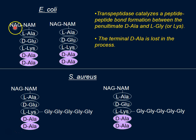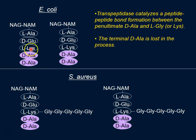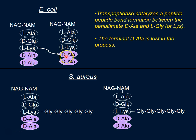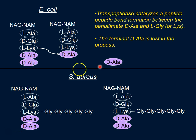Here I'm showing one polymeric strand and another strand — think of these as two parallel sugar strands that are not cross-linked. The cross-linking occurs between L-lysine of one strand and D-alanine of the neighboring strand — a covalent linkage forms between L-lysine and D-alanine.